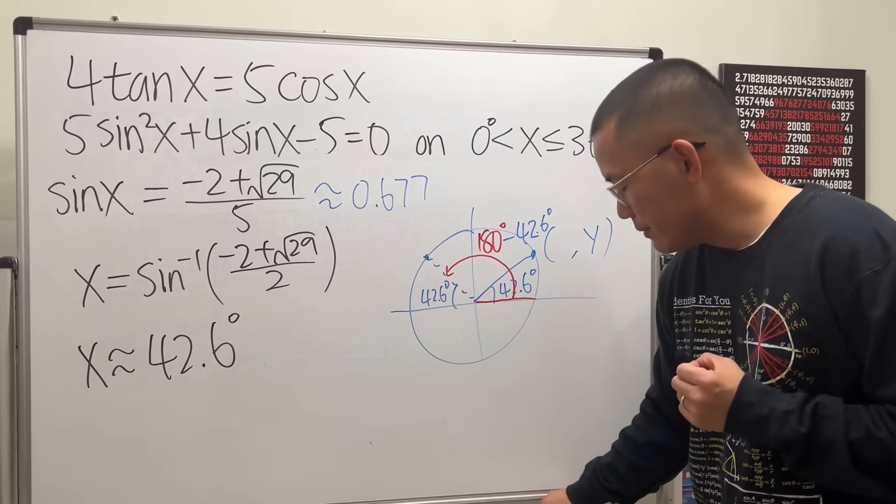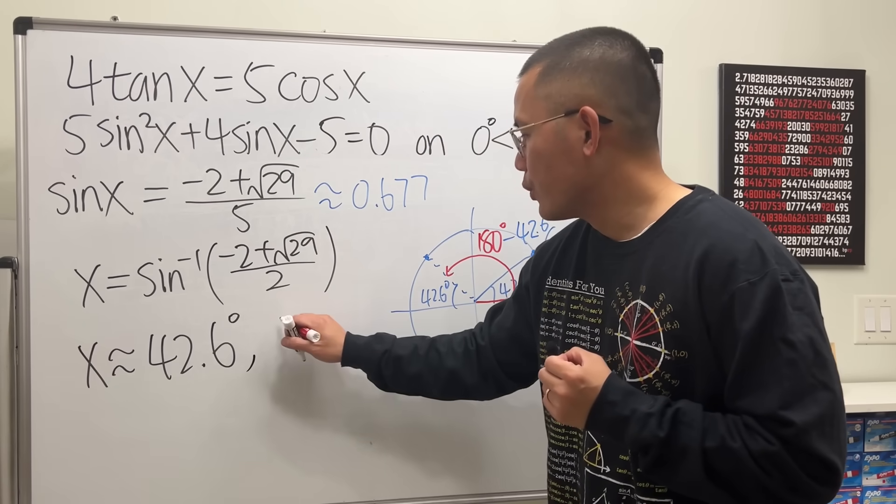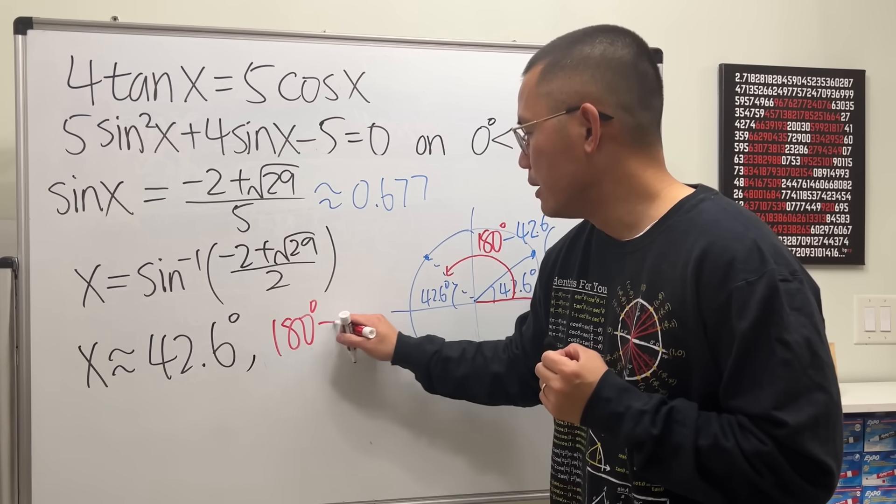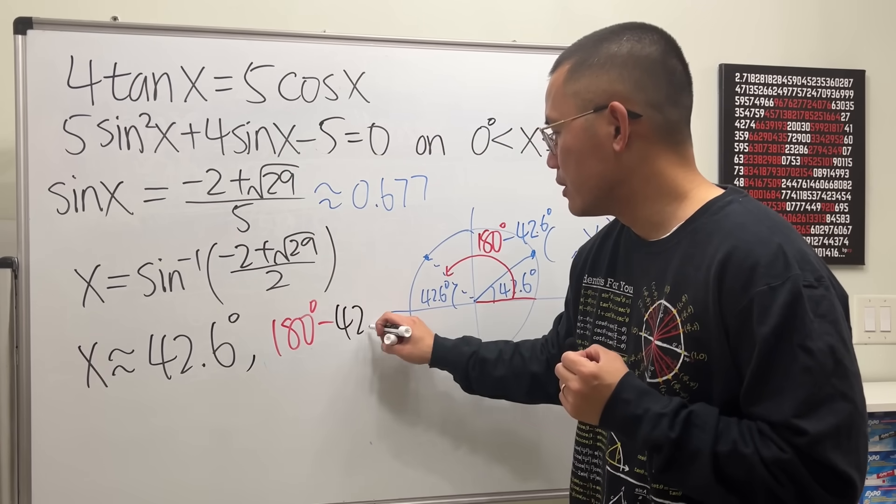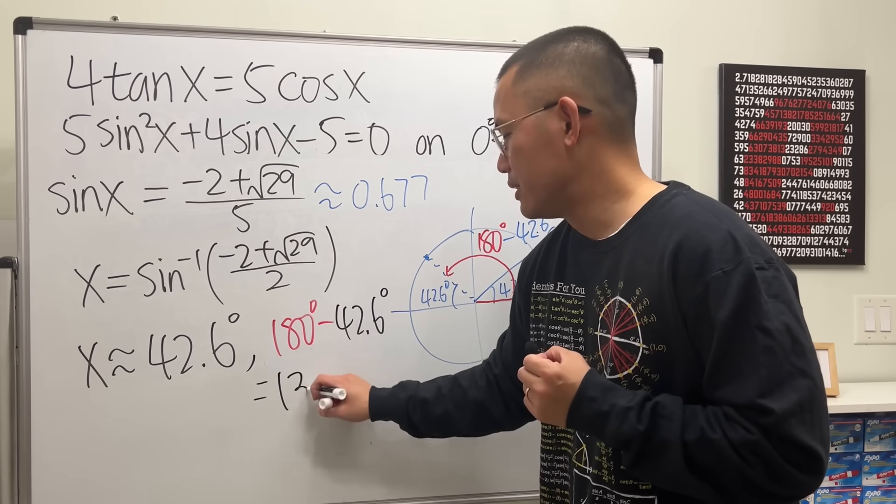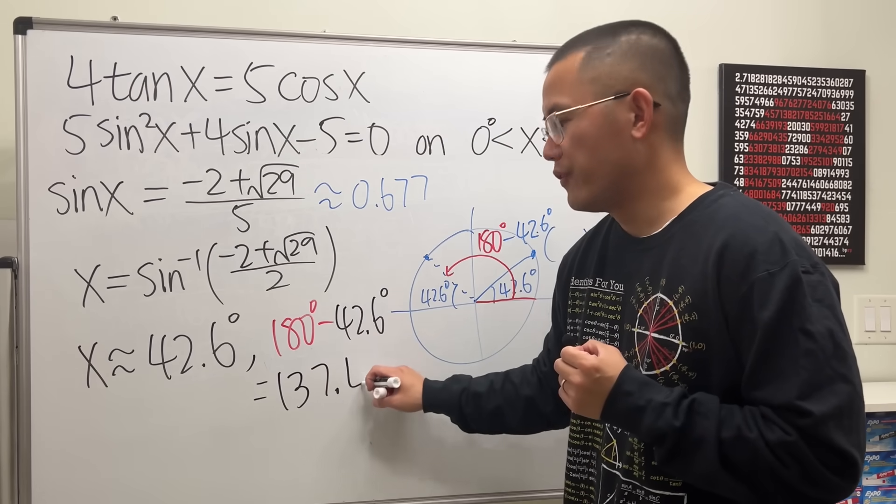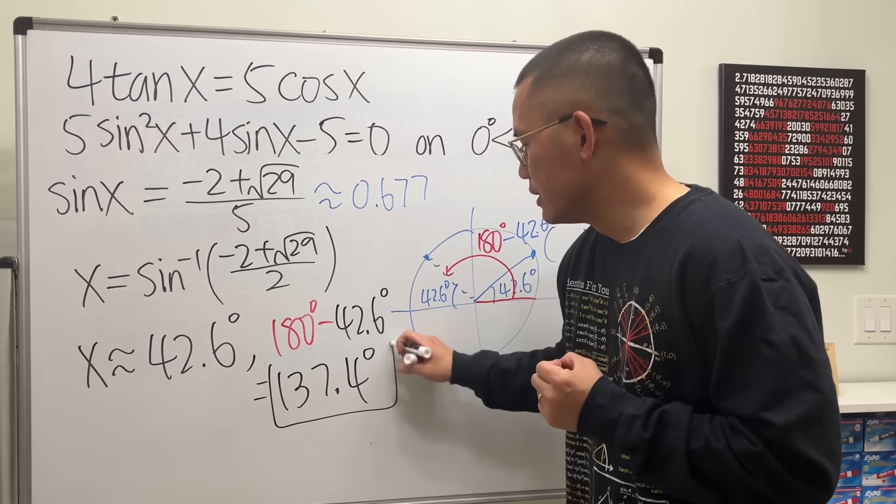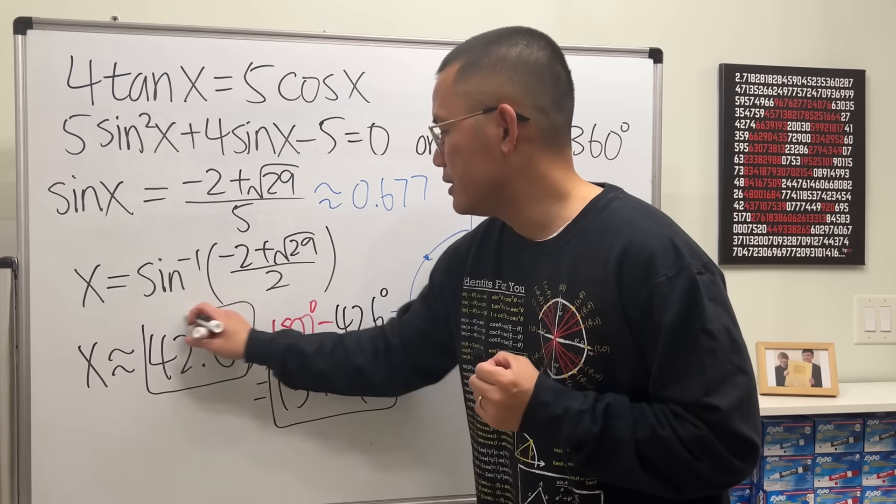Therefore, the other answer, I'll just put a little comma. We will do 180 degrees minus that, which is going to give us 137.4 degrees. So this is our first answer, and that will be the second answer.